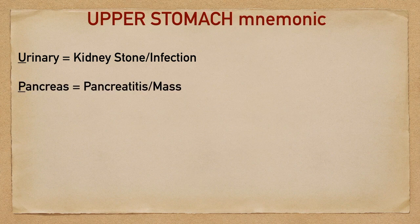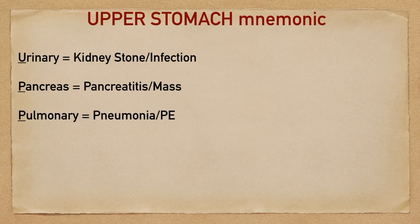P is going to help you remember pancreatic causes. This will include pancreatitis or any type of pancreatic mass. The second P is going to help you remember pulmonary causes. Remember, things in the thorax can cause upper abdominal pain as well, so this will include things like pneumonia or pulmonary embolism.